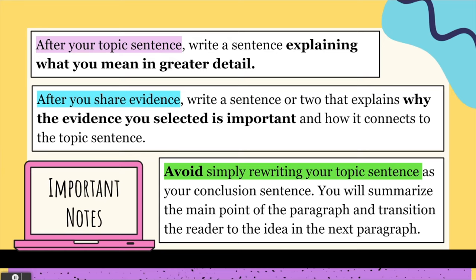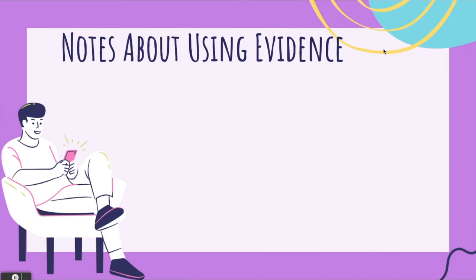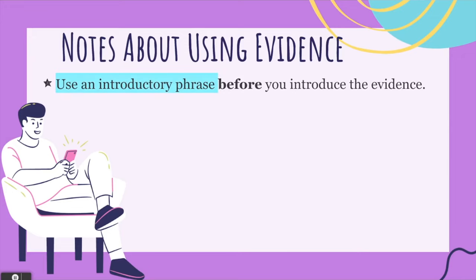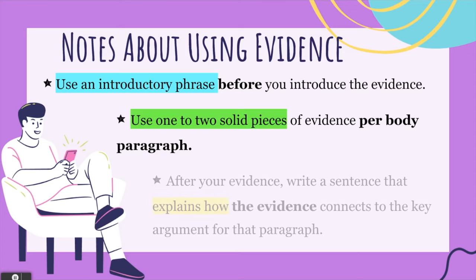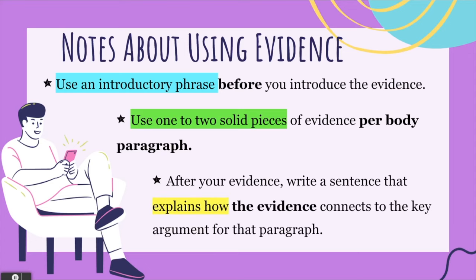You will summarize the main point of the paragraph and transition the reader to the idea in the next paragraph. As for using evidence — make sure you use an introductory phrase before you introduce the evidence. Use one to two solid pieces of evidence per body paragraph. And after your evidence, write a sentence that explains how the evidence connects to the key argument for that paragraph.